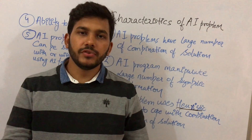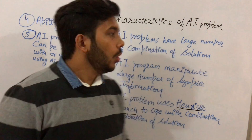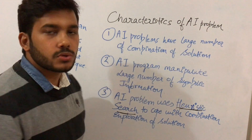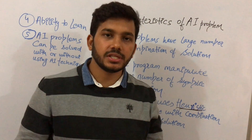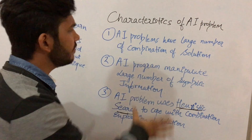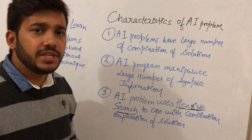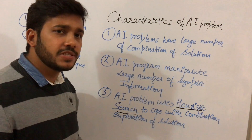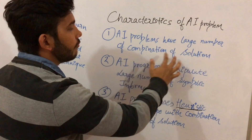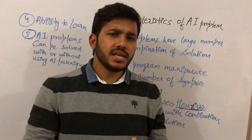In this video, I am going to talk about what are the characteristics of an artificial intelligence problem. The first characteristic is that artificial intelligence problems have a large number of combinations of solutions.